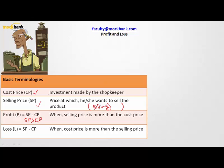Sometimes a shopkeeper may expect to gain a profit but it does not happen. Loss is cost price minus selling price — not selling price minus cost price. For a loss to occur, the cost price has to be more than the selling price, only then does one make a loss.